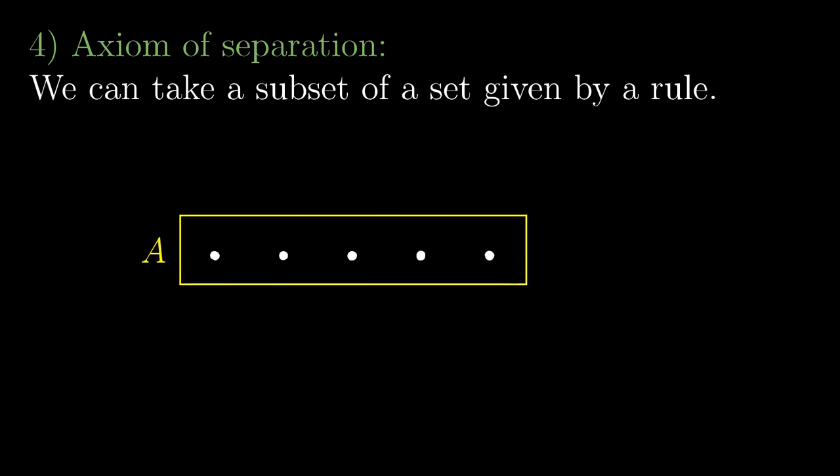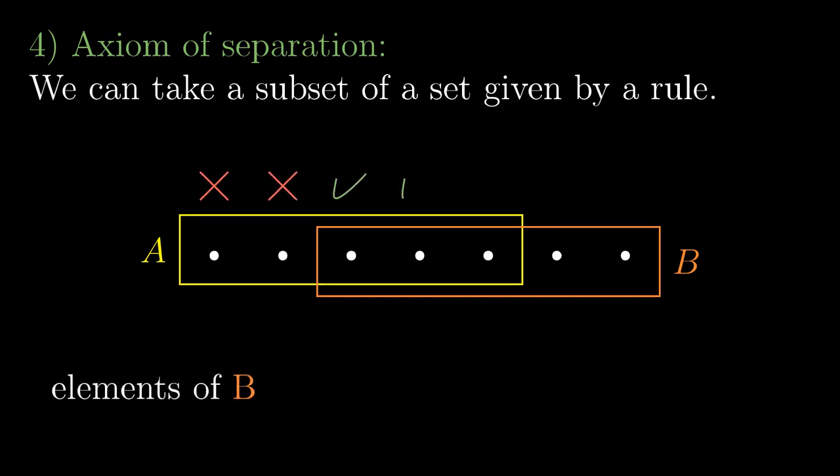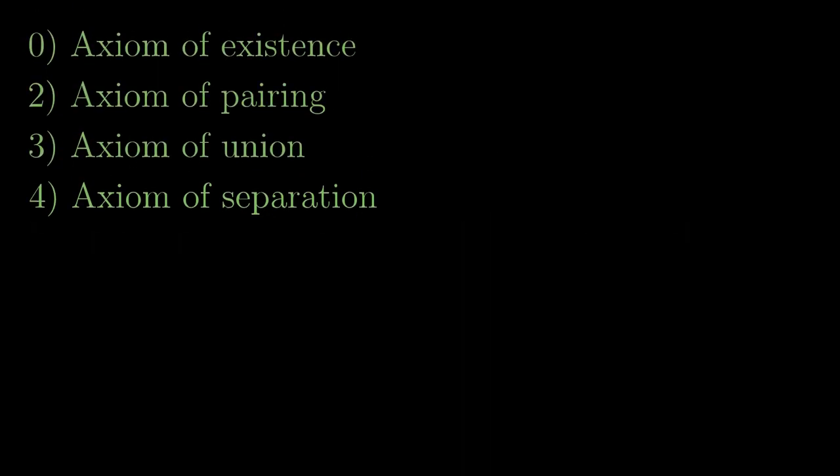The axiom of separation is the closest one to such a natural construction of a set, just that there must be a superset to start with. The axiom of separation is also useful for taking intersections. Let's take two sets A and B. Our rule is the element is a member of B and we apply the axiom of separation to set A. Only the elements of B satisfy the rule but we are not looking outside A while applying the axiom. So we construct the intersection of A and B. Personally, I consider the axioms of existence, pairing, union and separation as the axioms of basic constructions.